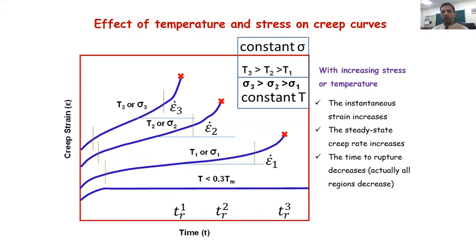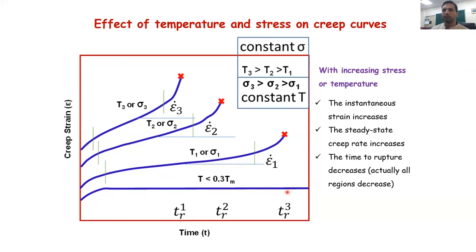Temperature and stress both cause creep, but how does the creep curve change when you change them? Whether you increase temperature or stress, they have similar types of effect on the creep plot. The first plot is when the temperature is below the homologous temperature of 0.3 Tm — ideally no creep would take place. There is a transient stage, but then after that the creep rate is almost zero — no significant change in dimension.